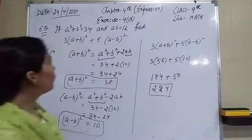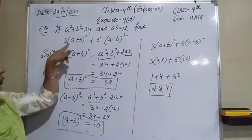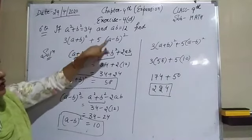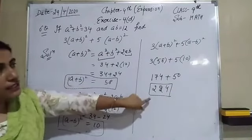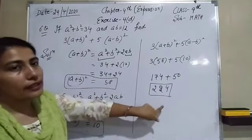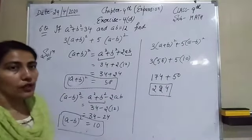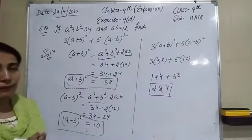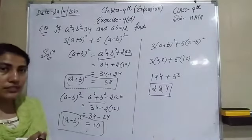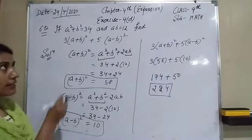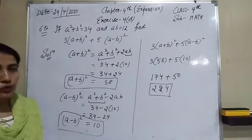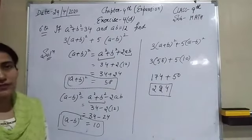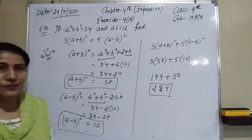So the value of 3(a + b)² + 5(a − b)² is 224, which is the required answer. Hope all of you are clear about all the concepts of exercise 4D. For tomorrow we will discuss the next questions of this worksheet. Thank you so much.